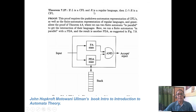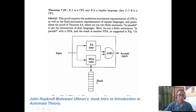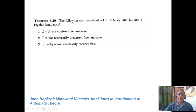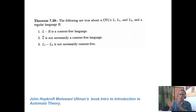L is a context-free language and R is a regular language. The intersection of context-free with regular language is context-free. L minus R is also context-free. So you must try to visualize or memorize these rules — they are very important. The complement of a context-free language is not necessarily context-free. A lot of questions will come on this.